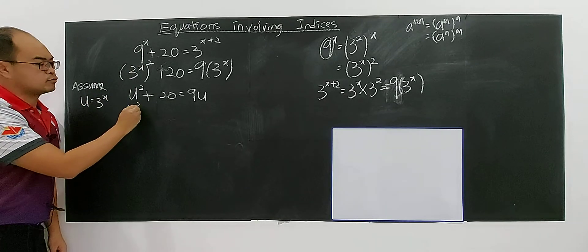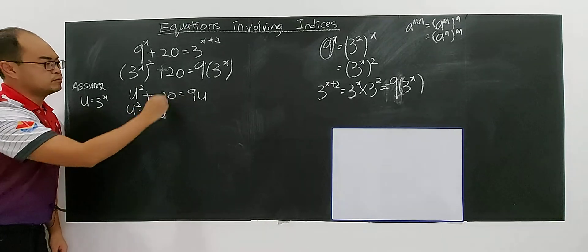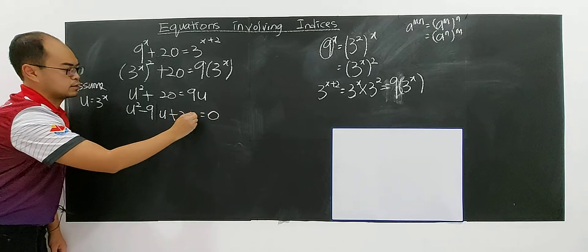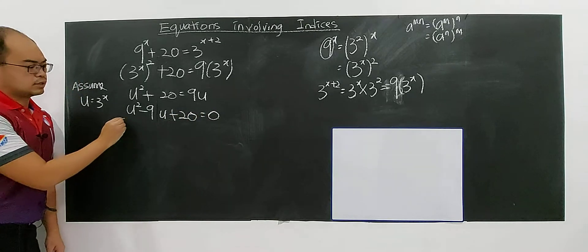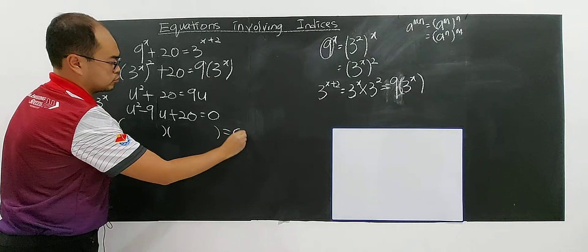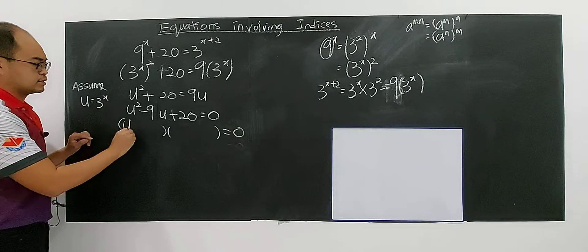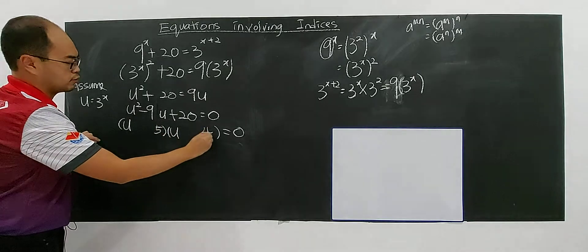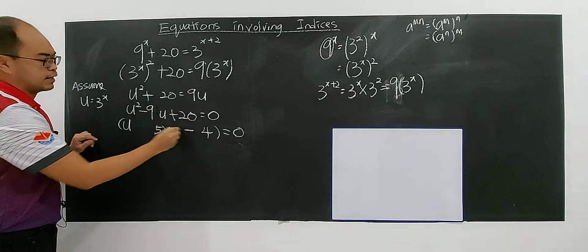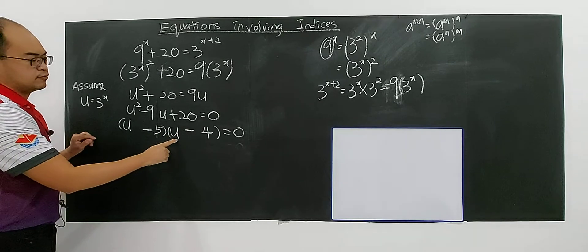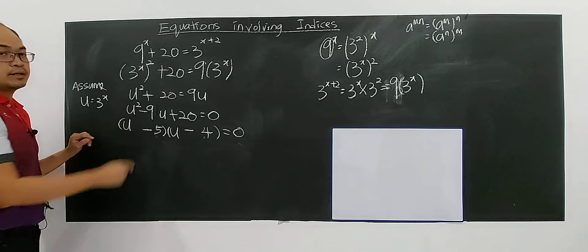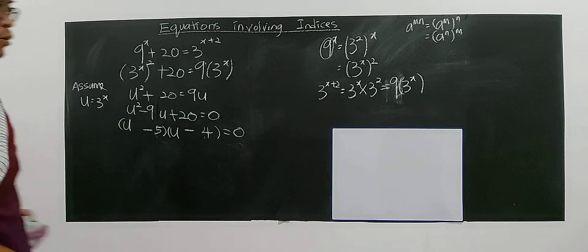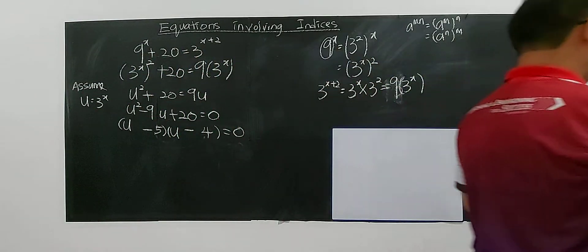So you have u squared minus 9u plus 20 equals zero, in the general form of the quadratic. Now just do it like normal — factorize the quadratic. You get (u − 5)(u − 4) = 0, because 5 and 4 multiply to give 20 and add to give negative 9. So you have two solutions.